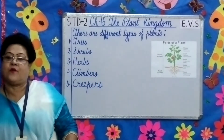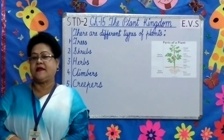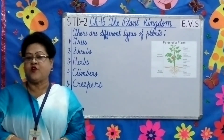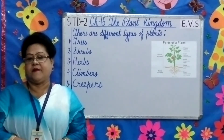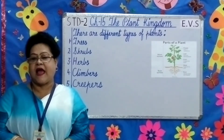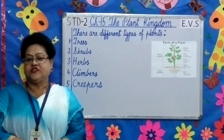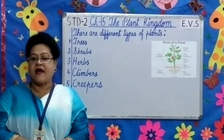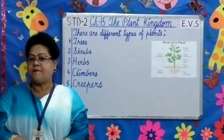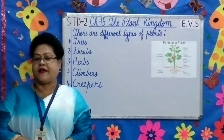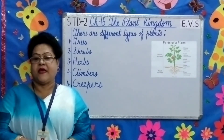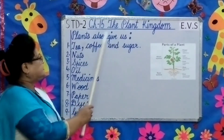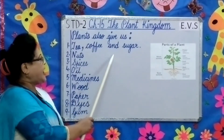Plants are very useful to us. We get many things from plants. They give us food, fruits, and vegetables. They make the air fresh and clean. They provide shelter to animals like monkeys and birds. Flowers and leaves of many plants are used for decoration and for making bouquets. Plants also give us tea, coffee, and sugar.